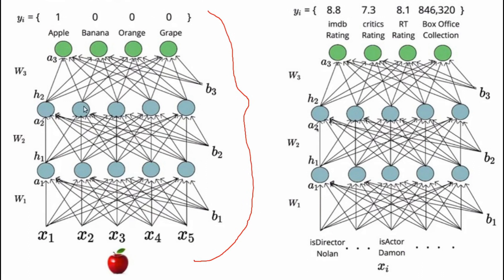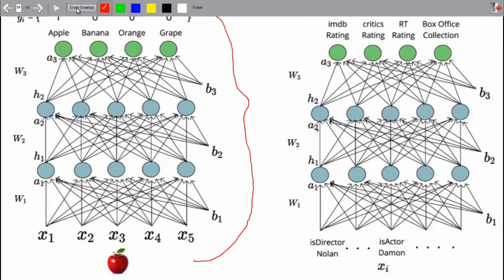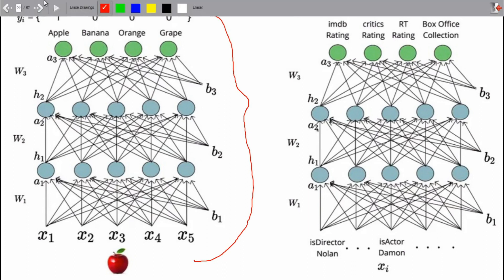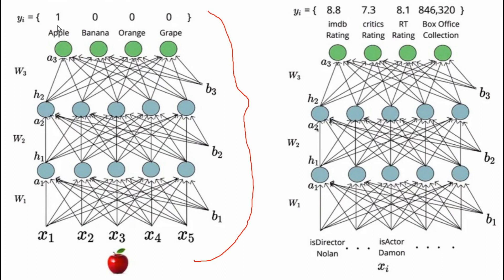If you want to add an image, we will classify it as an apple, banana, orange, or grape. If you want to add an apple image, it is not the real output. It is a multi-class classification.